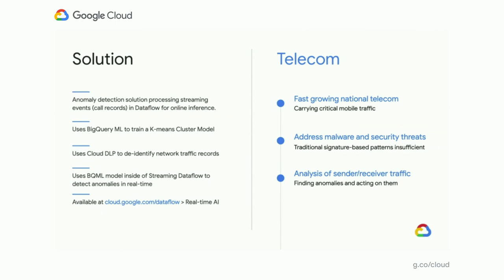In our second motivating example, we also developed an anomaly detection solution which processes streaming event call records for this telecom. The processing is happening in Dataflow, and the online inference is also happening inside of Dataflow. We use BigQuery ML to train a k-means cluster model, and we also use Cloud DLP to de-identify and anonymize network traffic records before they're used for training. Once the BQML model is trained, it gets deployed into the streaming Dataflow pipeline and is used for detecting anomalies in real time. This solution is also available on cloud.google.com/dataflow real-time AI.